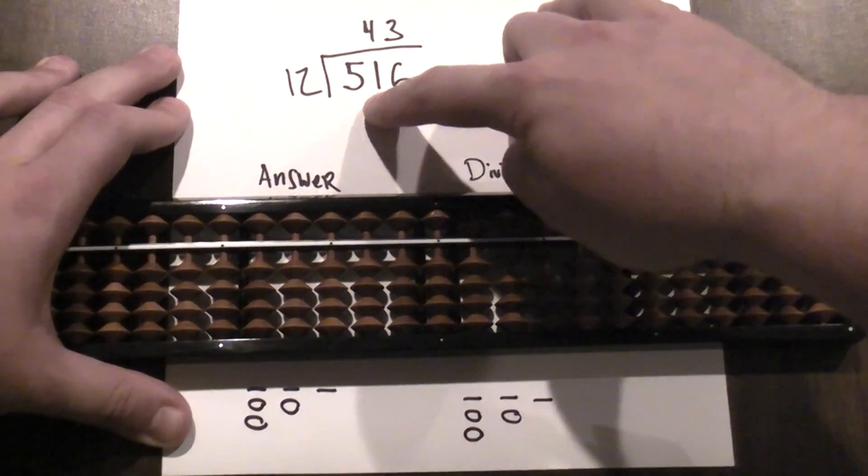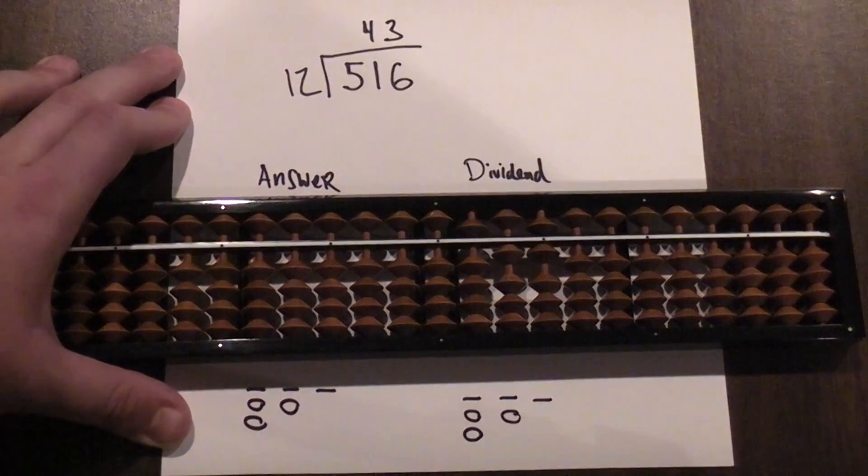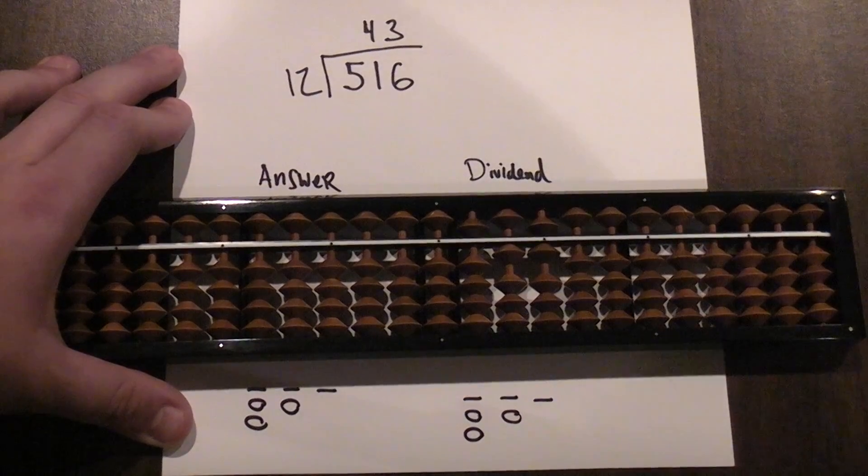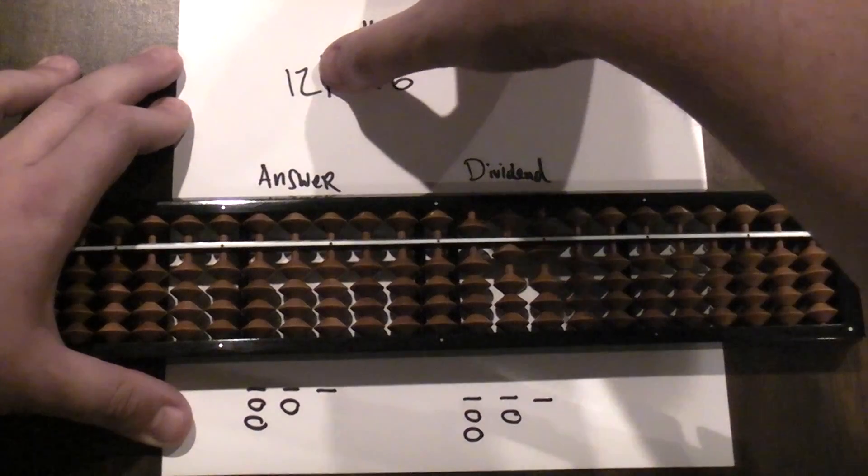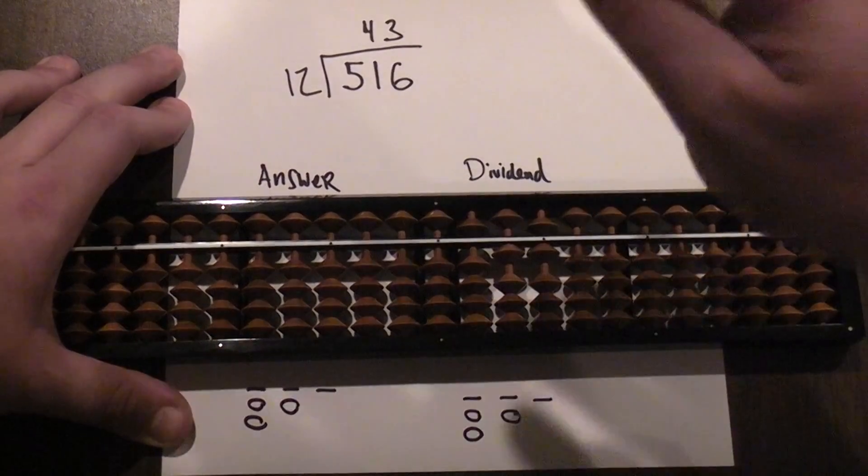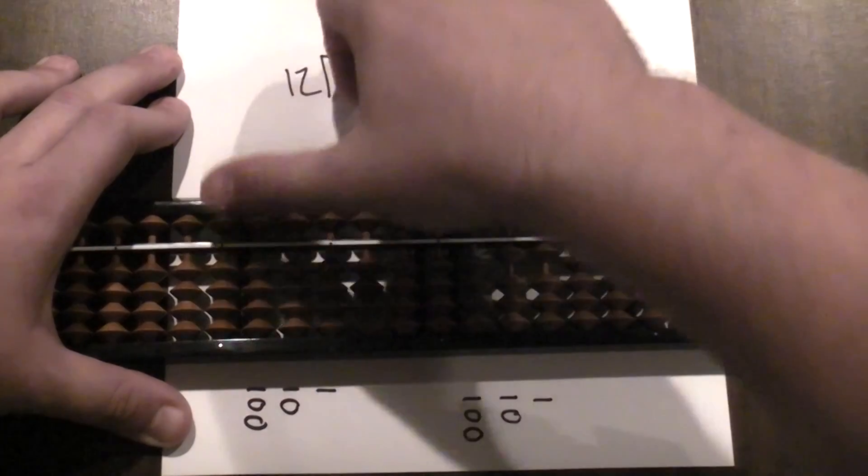All right, how many times is 12 going into 51? Well it goes in four times - 12 times 4 is 48. So what I'm going to do is say to myself, okay, 12 times what is going to get me closest to 51? 12 times 4. So I go here where I'm putting in my answer.